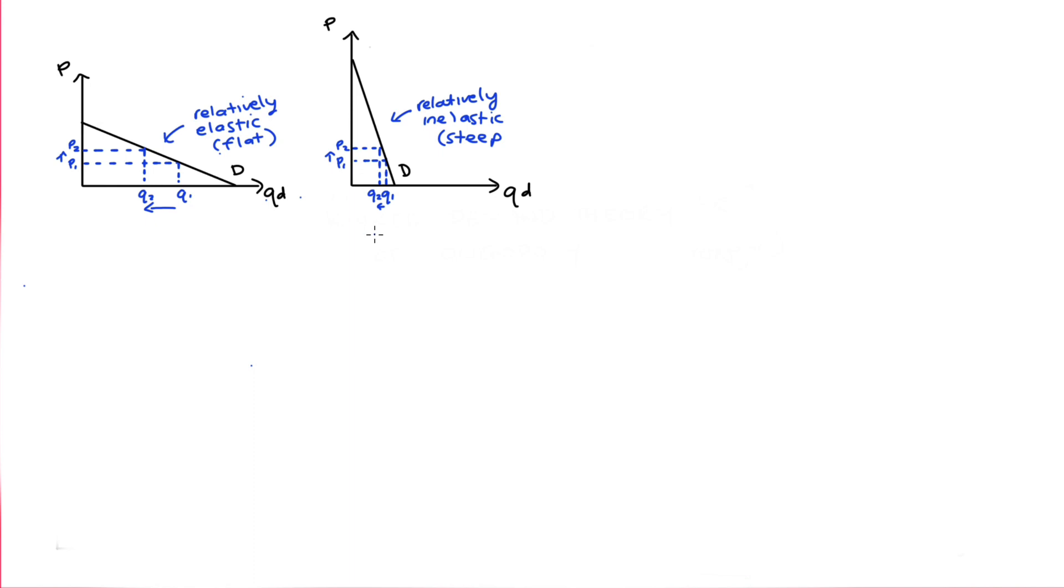The second thing that we need to know is that the marginal revenue function associated with straight line demand curves is going to have double the slope as demand, but the same price axis intercept. So marginal revenue will be twice as steep as demand, and it will cut through the quantity axis exactly halfway between the quantity axis intercept and the origin.